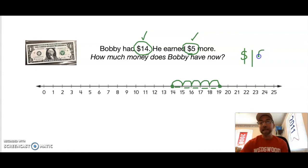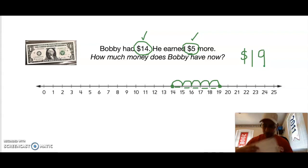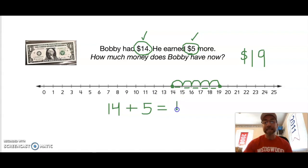Where did I land once I started at 14 and made five hops? The answer is 19. So how much money does Bobby have now? He has $19. Now mathematicians always write number models, so on your sheet protector right underneath your number line, let's write our number model: we started with 14, we added 5, and it equals 19.